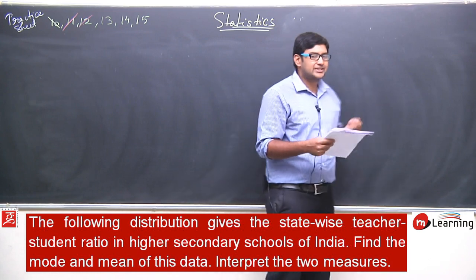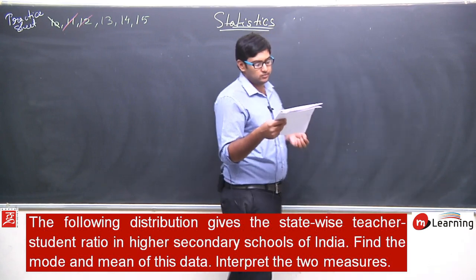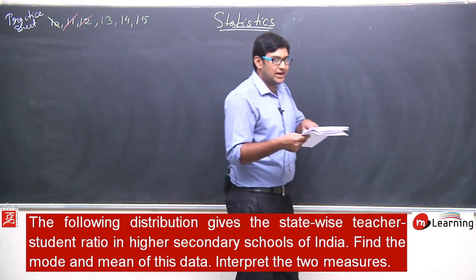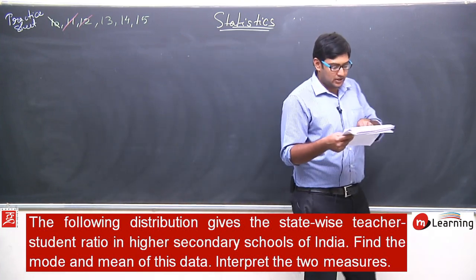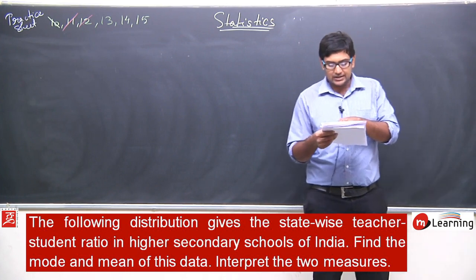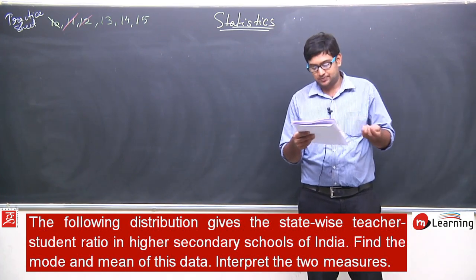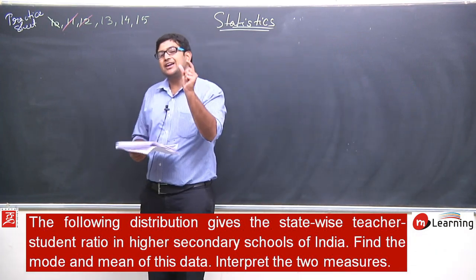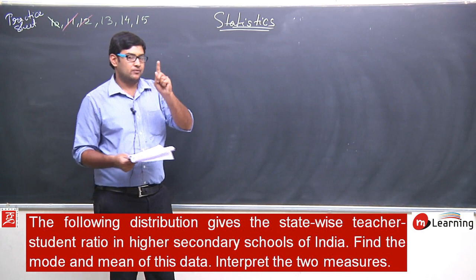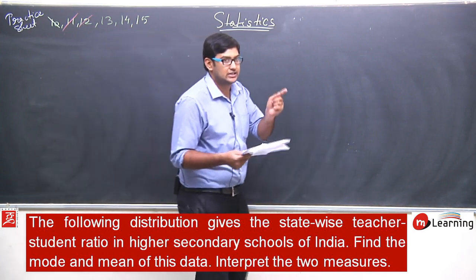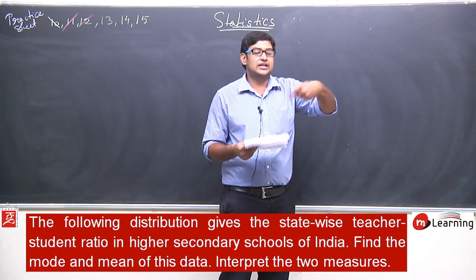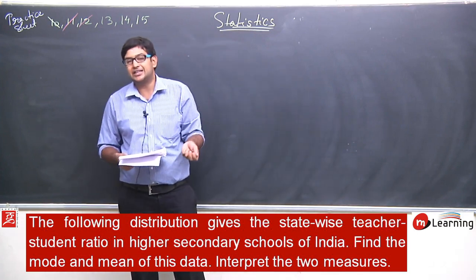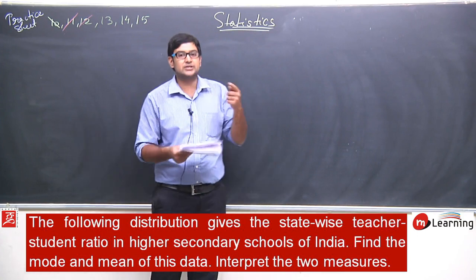You can see the first column is number of students per teacher and the second column is number of states. Number of students per teacher represents how many students are under one individual teacher — that is basically the number of students per teacher.